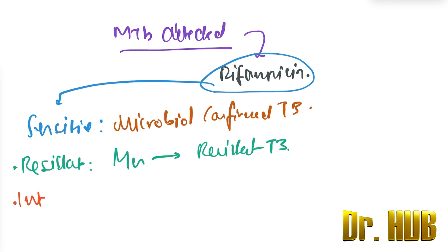Here we have to repeat the CB-NAT and get a second sample. If the second sample is also indeterminate, then you take a sample for liquid culture.